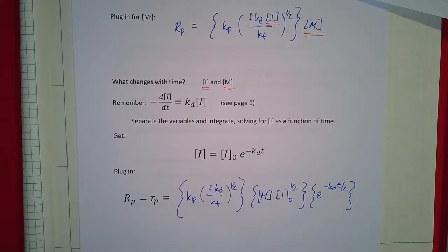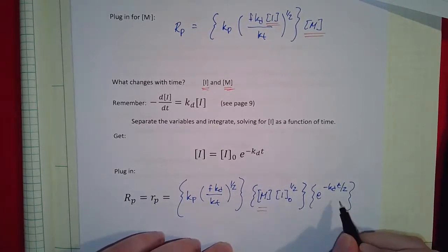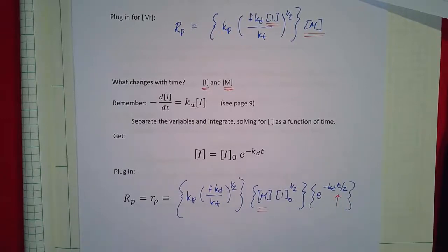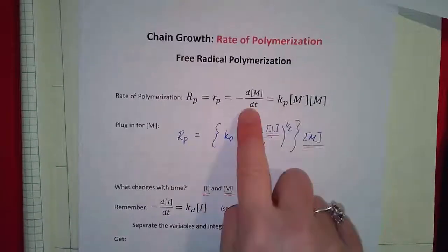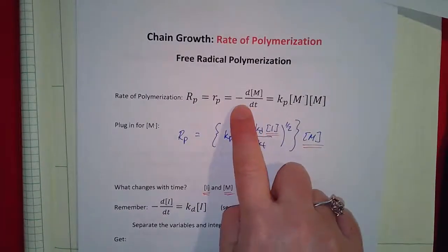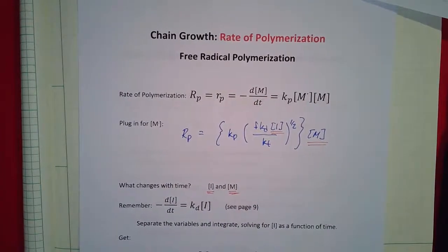So there is an equation for the rate of polymerization. What changes with time? The monomer concentration and time. We can separate the variables and integrate this, because it equals minus dM/dt.